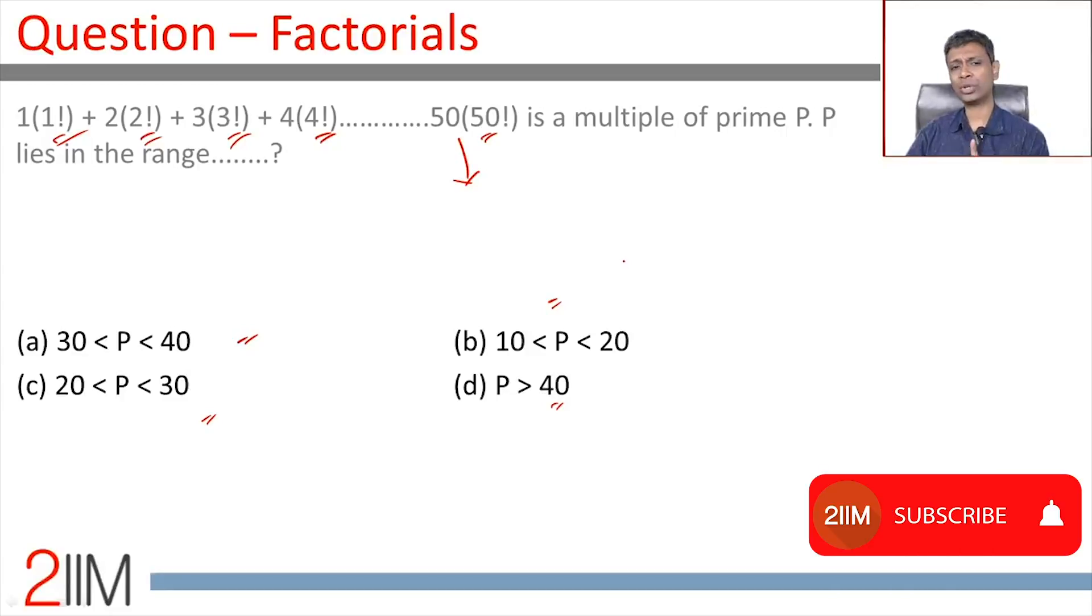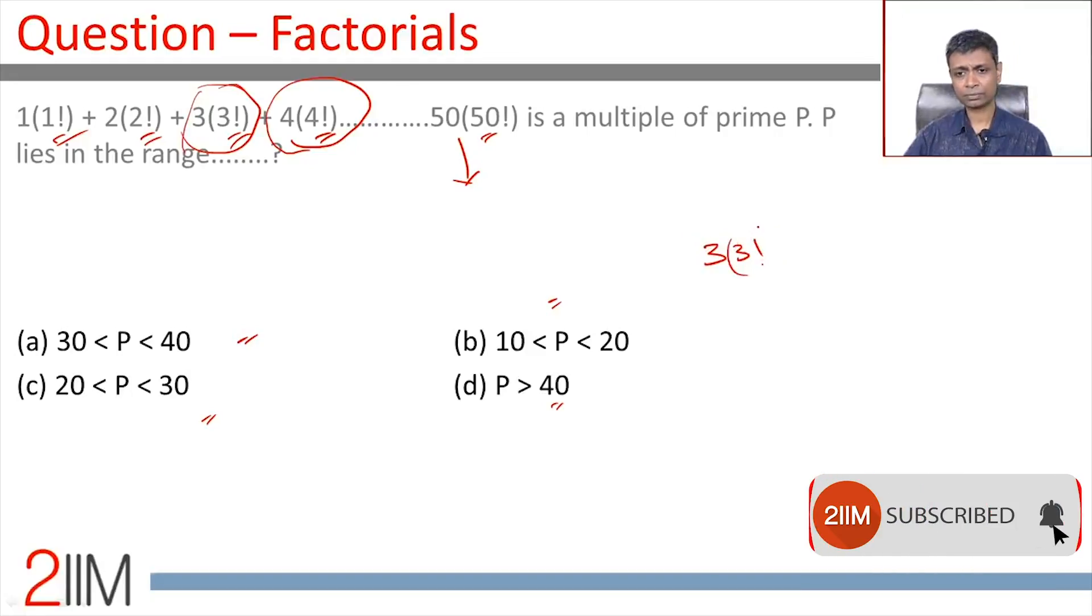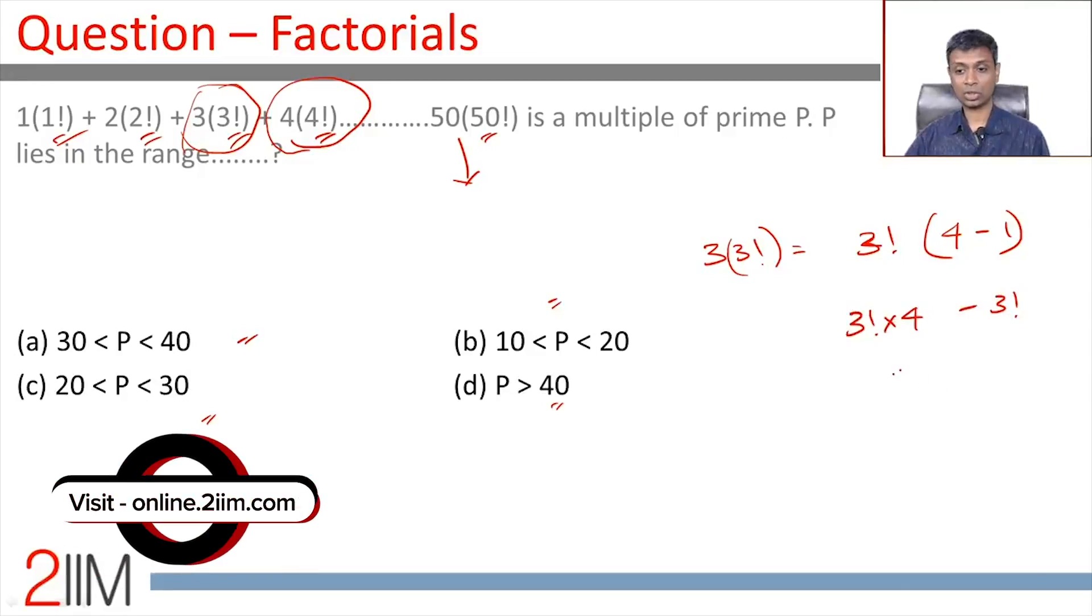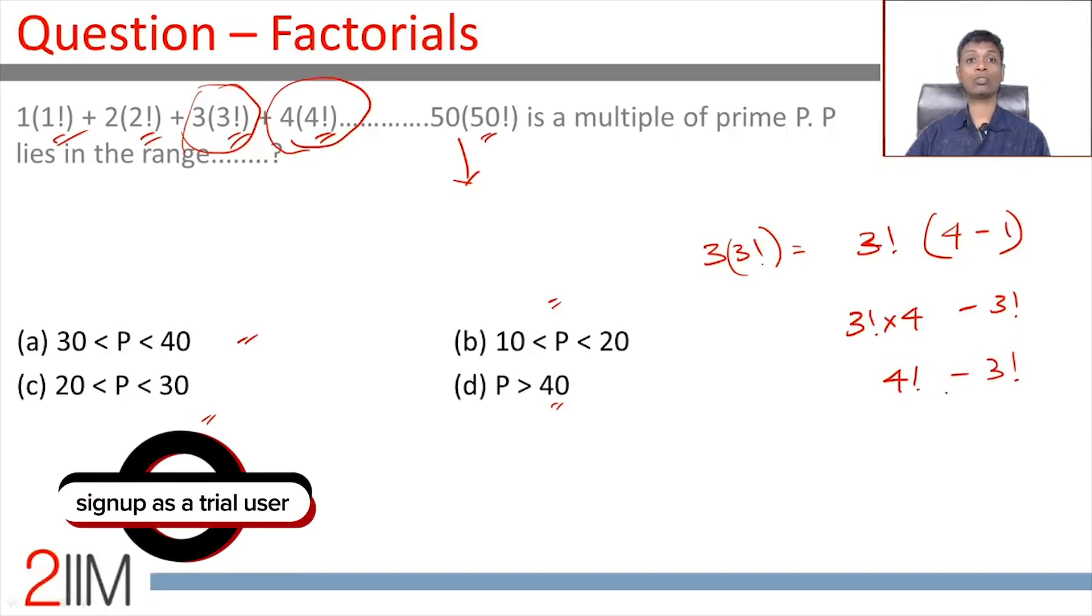Now, it's a fabulous question because of this one particular pattern we're going to be discussing. This is 3 into 3 factorial or 4 into 4 factorial. Let's take 3 into 3 factorial. I'm going to write this as 3 factorial into 4 minus 1. 3 factorial into 3 is 3 factorial into 4 minus 1 or 3 factorial into 4 minus 3 factorial. Now, this is nothing but 4 factorial. Bingo! We have a breakthrough. It's a fabulous question if you just rewrite it like that.